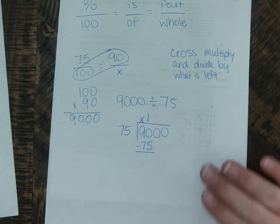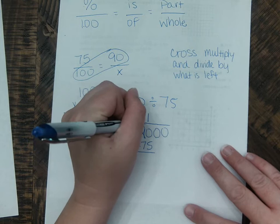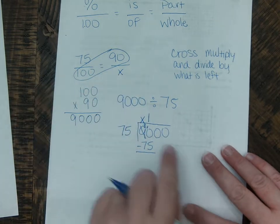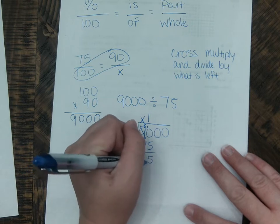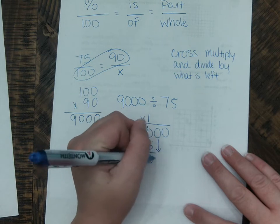I can't do 90 minus 75 very easily in my head. So I have to borrow from the 9. That becomes an 8. And the 0 turns into a 10. So I get 10 minus 5, which is 5. And 8 minus 7, which is 1. So now I'm going to bring my 0 down.